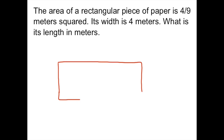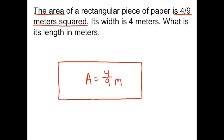We're told that the area is four-ninths meters squared, so area equals four-ninths meters squared. Its width is four meters. We want to know what is its length, so that's our question mark. We know that to find area we have to multiply length times width, and that will give us our area. Here we have our area which is four-ninths, and we have the width.